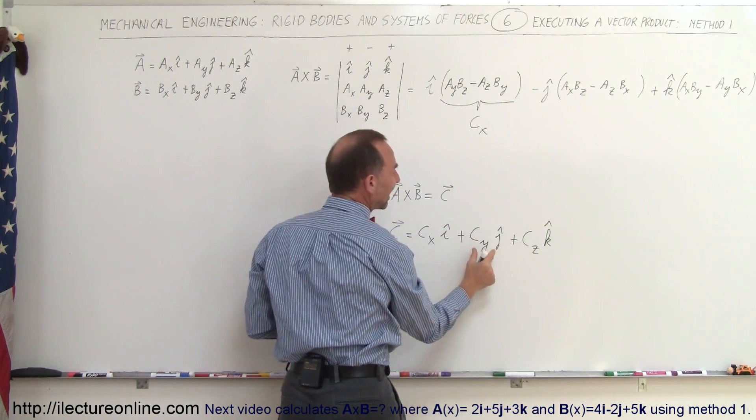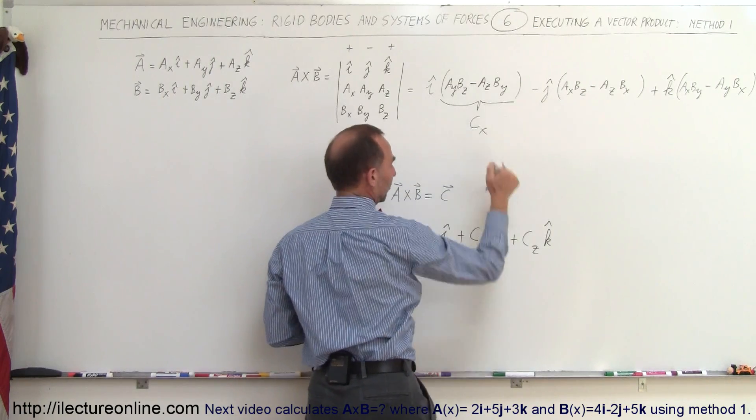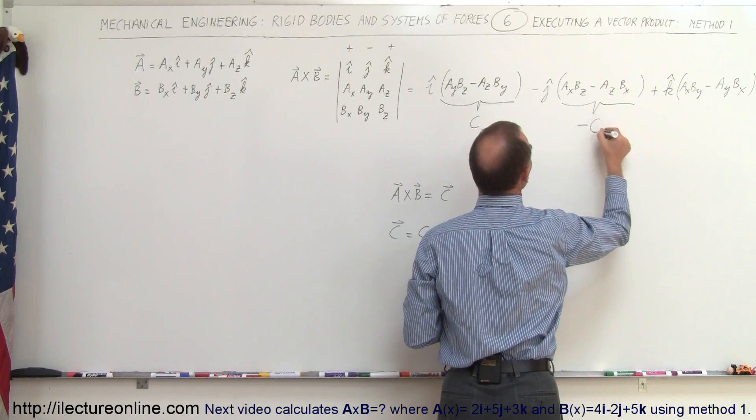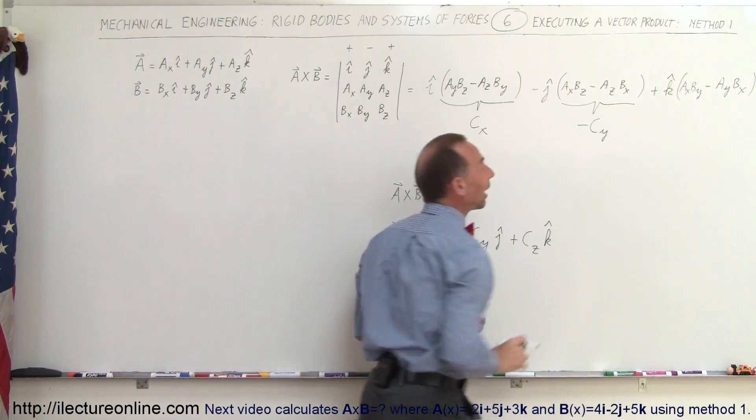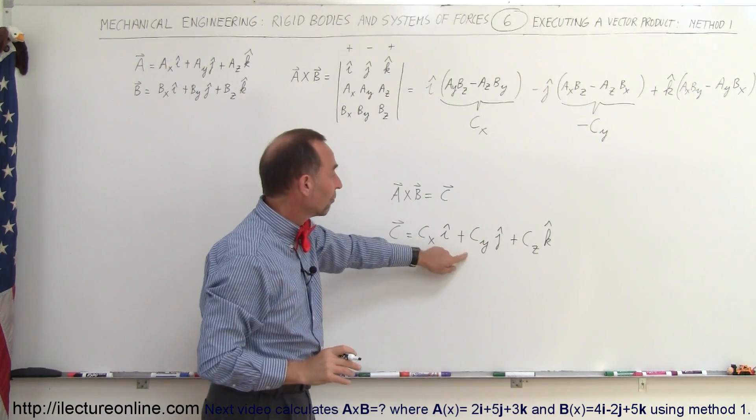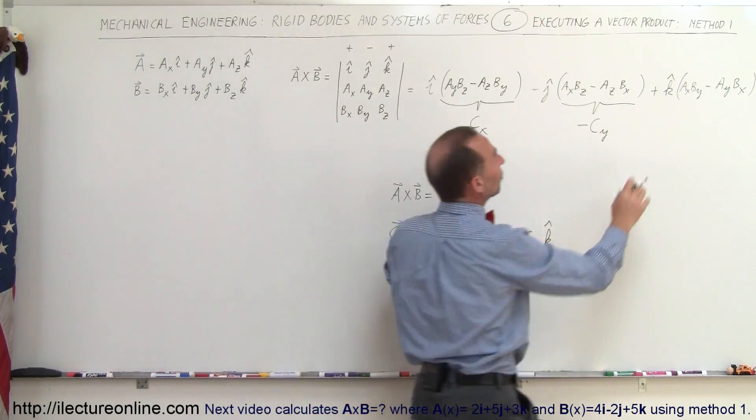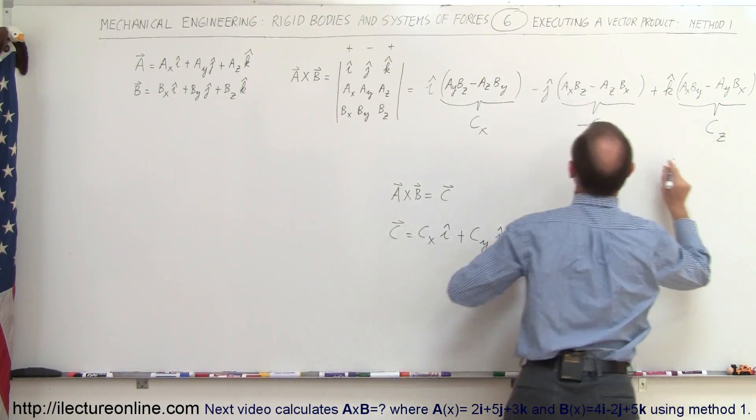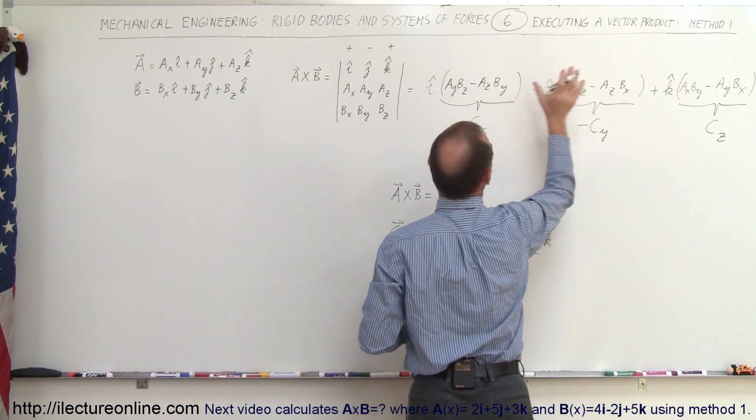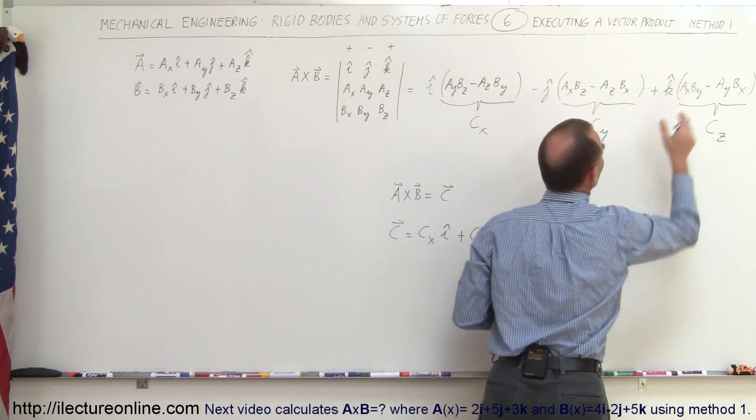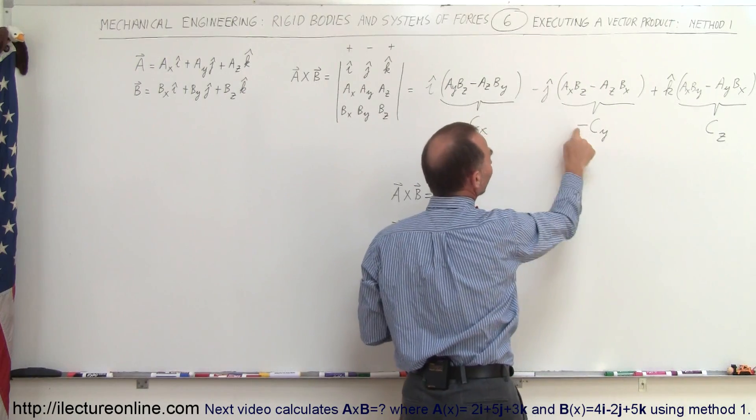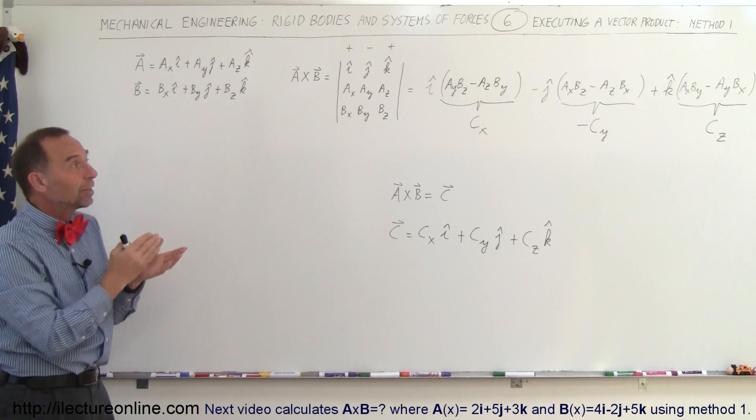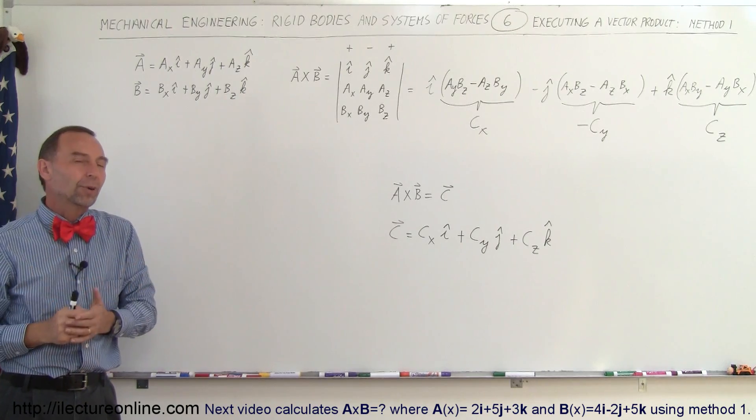This quantity will correspond to the negative of Cy because it's negative right here. So this quantity will be negative Cy. So it would be the Y coordinate of the resultant vector, the C vector. And then this quantity will correspond to Cz. So this is the X coordinate, the Y coordinate, and the Z coordinate of the resultant vector C. And of course, don't forget the minus sign for the middle one. And that's how we use this particular method to find the cross product.